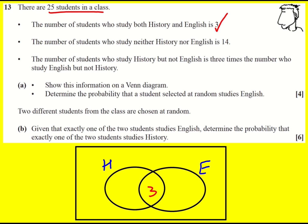The number of students who study neither is 14, so that can go on the outside. The number who study History but not English is three times the number who study English but not History. So if I just call this one x, then this would be 3x, and we can create an equation.